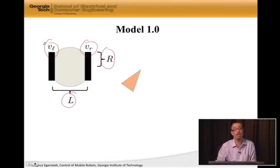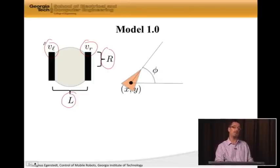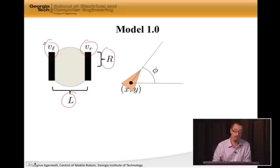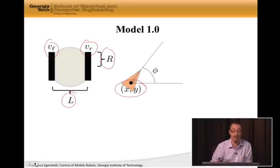Now, what are the states? Well, here's the robot. I've drawn it as a triangle because I want to stress the fact that the things that we care about typically for a robot is, where is it? X and Y, the position.